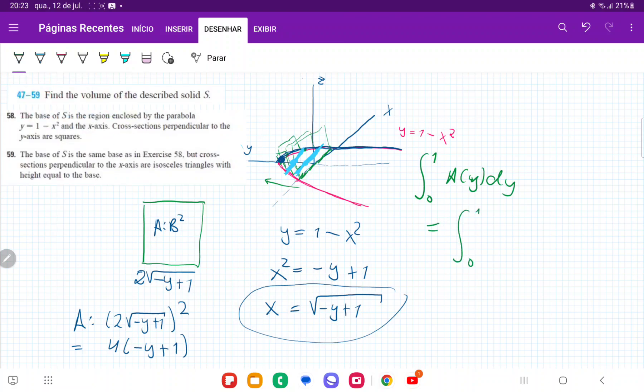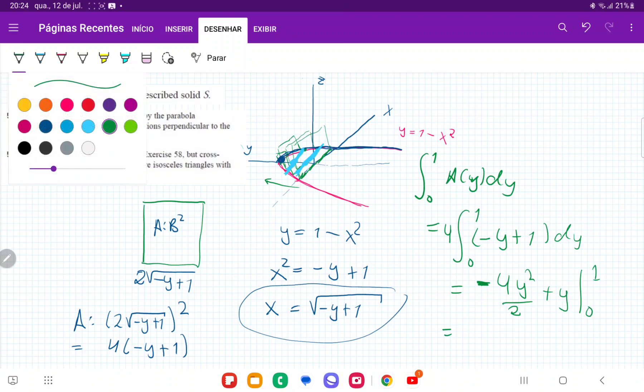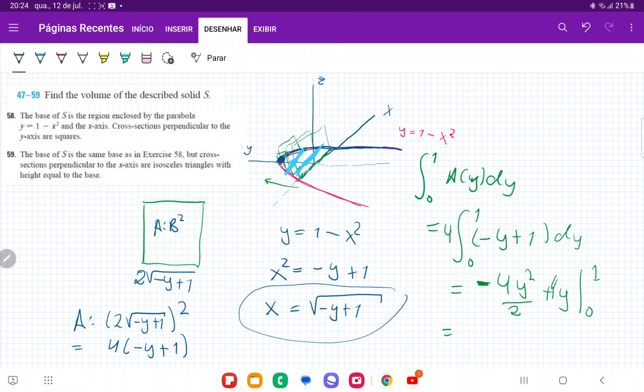This goes, it's the integral from 0 to 1. And the 4, I'm going to put that outside. And this is going to be minus y plus 1 times dy. So when we integrate it, we get, let's see, y squared, that's going to be minus 4y squared over 2 plus y from 0 to 1. It should have been plus 4y because that 4 also multiplies.